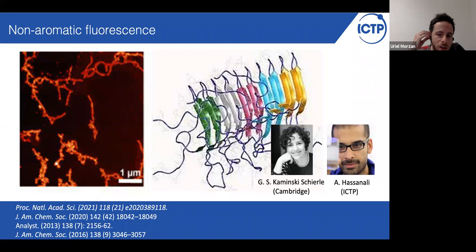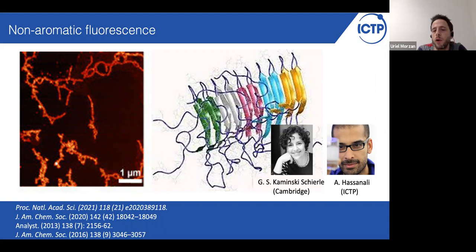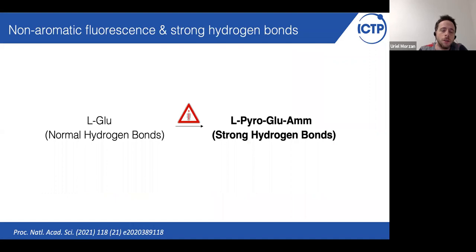Recently, in the group of Gabriel Kaminsky Shriel at Cambridge, they found some protein aggregates that are associated with neurodegenerative diseases. They found that these compounds can fluoresce without the presence of any aromatic residue, which is peculiar because we normally expect fluorescence, at least in biological matter, to arise from aromatic components. Together with Ali Hassan Ali here at ICTP, they observed that this compound contains a very rich strong hydrogen bond network. So this compound is full of the strong hydrogen bonds I just described.